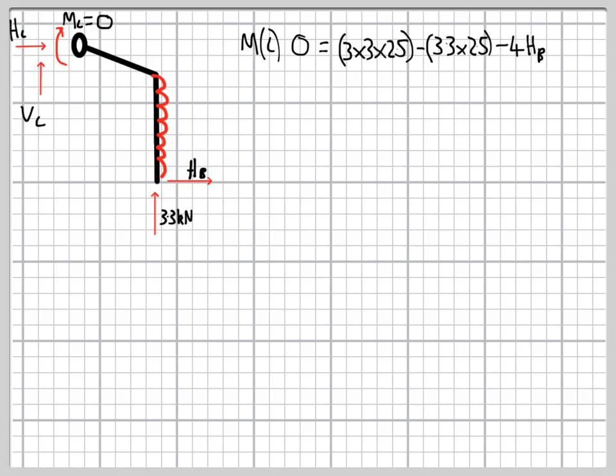And rather conveniently, we find we've got one unknown in this equation, so we can work that through. And what we find is that the horizontal reaction, Hb, is 3.56 kN. So this is good.